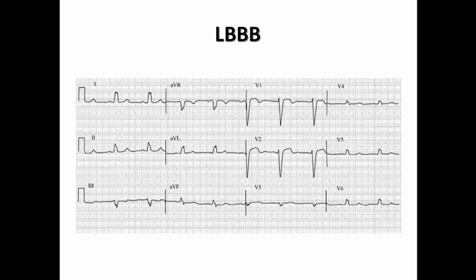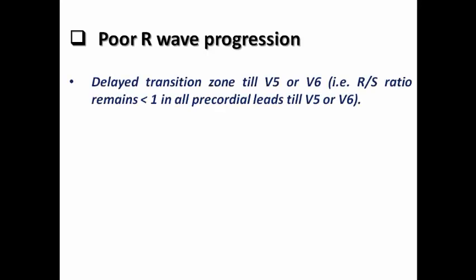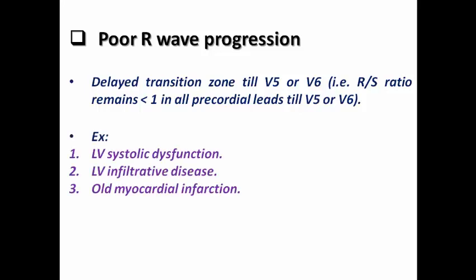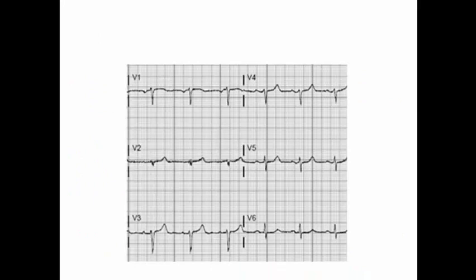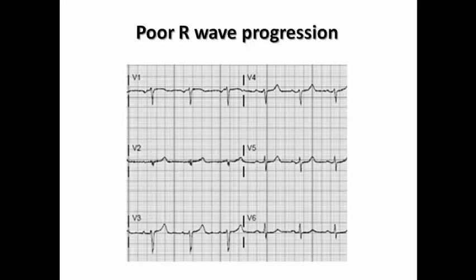When we say poor R wave progression in ECG, we mean there is a delayed transition zone until V5 or V6 — meaning the RS ratio remains less than 1 in all precordial leads until V5 or V6. This has the same causes as chronic left bundle branch block: LV systolic dysfunction, LV infiltrative disease, or old myocardial infarction. For example, in this ECG we can see the RS ratio is less than 1 until V5, indicating poor R wave progression and raising suspicion of structural heart disease and coronary artery disease.